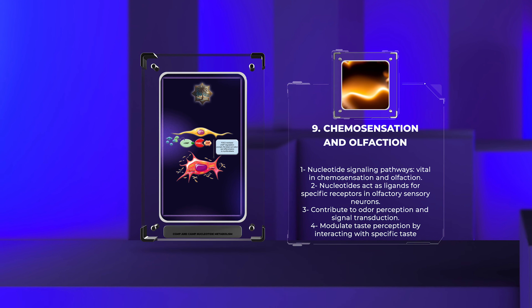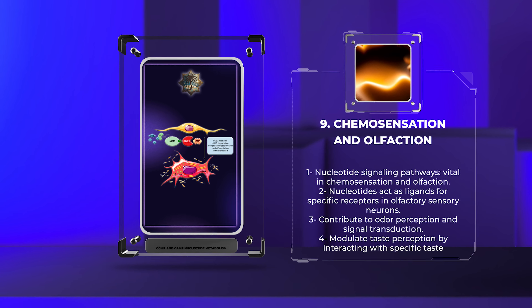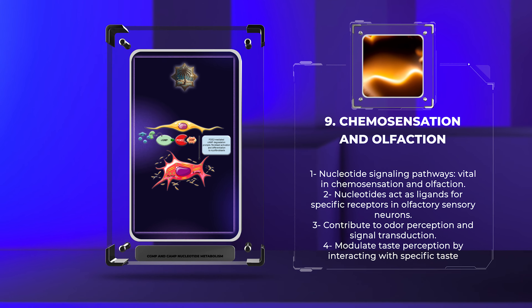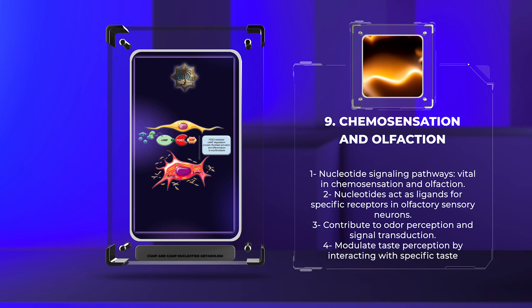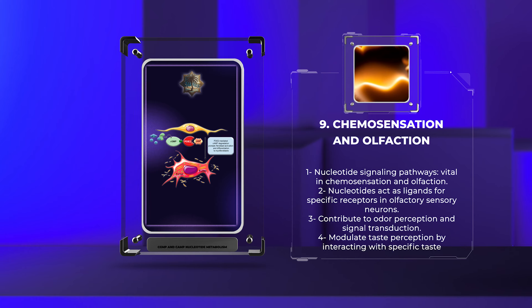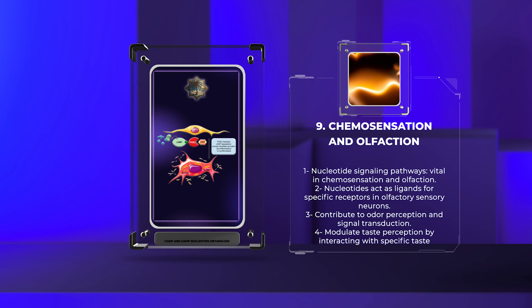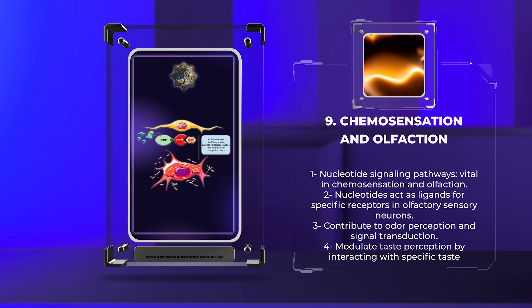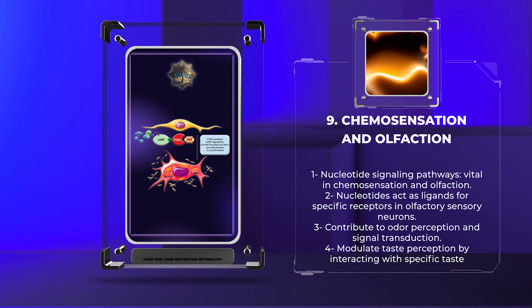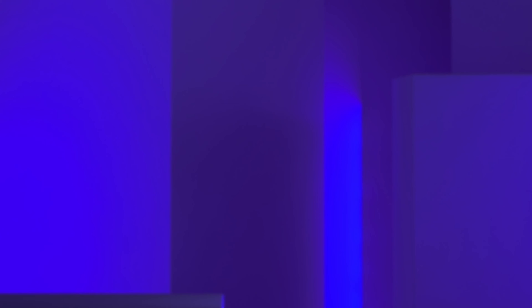Nucleotide signaling pathways play a vital role in chemosensation and olfaction. In the olfactory system, nucleotides act as ligands for specific receptors expressed in olfactory sensory neurons. By activating these receptors, nucleotides contribute to odor perception and signal transduction. Moreover, nucleotides modulate taste perception by interacting with certain taste receptors. Unraveling these mechanisms enhances our understanding of sensory perception and may aid in the development of novel treatments for olfactory and taste-related disorders.